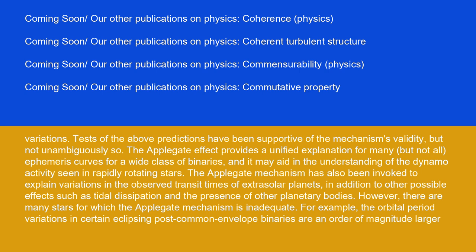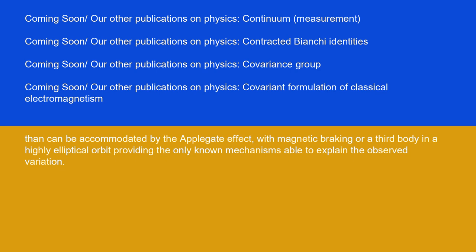However, there are many stars for which the Applegate mechanism is inadequate. For example, the orbital period variations in certain eclipsing post-common envelope binaries are in order of magnitude larger than can be accommodated by the Applegate effect, with magnetic braking or a third body in a highly elliptical orbit providing the only known mechanisms able to explain the observed variation.